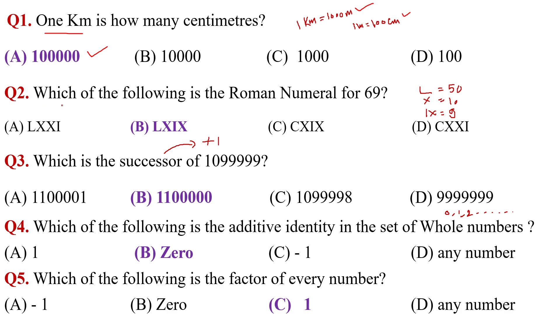Question number two, which of the following is the Roman numeral for 69? L is 50, X is 10, IX means 9. When you combine all these letters, then it will be LXIX.